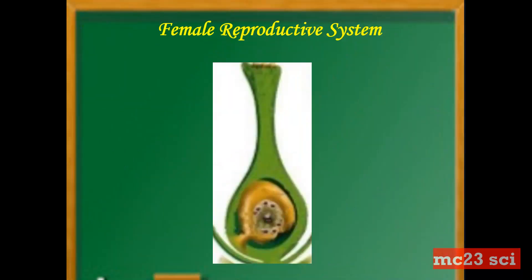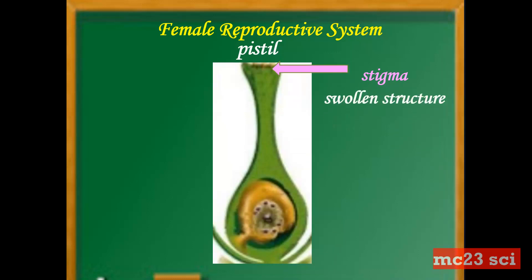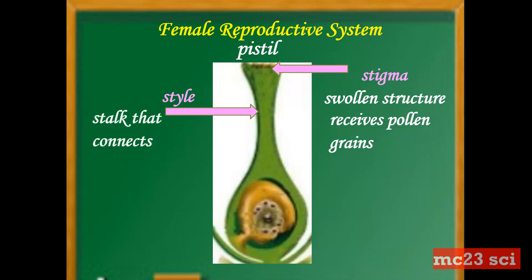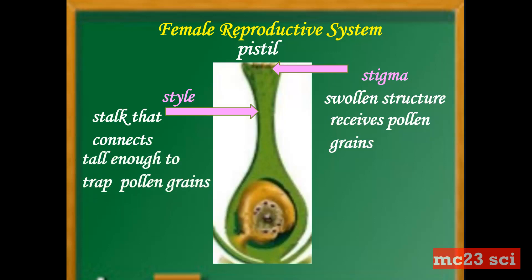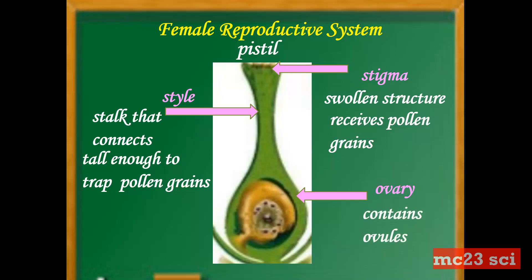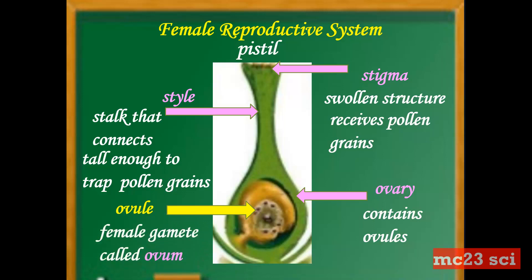For the female reproductive system, this is the pistil. It consists of the stigma, which is the swollen structure that receives the pollen grain, and the style, the stalk that connects the stigma and the ovary, also tall enough to trap the pollen grains. The ovary contains the ovules. The ovule has the female gametes, or the egg cells, which we call the ovum.